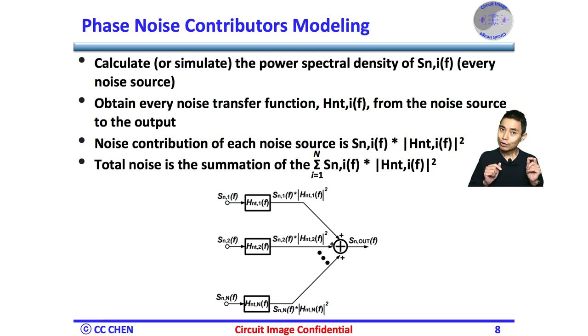From the noise source to the output you care about. Since the system is a linear time invariant, each noise contribution of each noise source should be the individual power spectral density times the square of the noise transfer function in magnitude. Lastly, the total noise is the summation of each noise contribution in superposition.